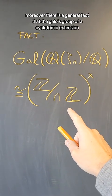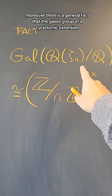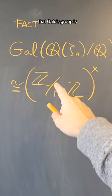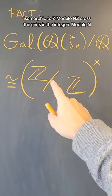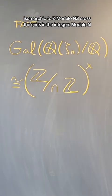Moreover, there is a general fact that the Galois group of a cyclotomic extension, the extension of Q adjoined an nth root of unity, is isomorphic to (Z/nZ)×, the units in the integers modulo n.